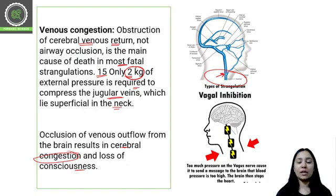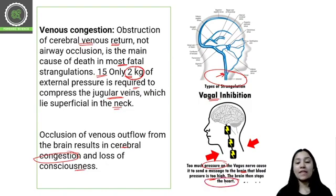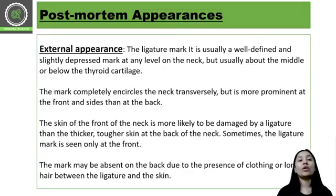Vagal inhibition occurs when too much pressure on the vagus nerve sends a message to the brain that blood pressure is too high, causing stoppage of the heart. Because of this stoppage of the heart, blood pumping stops and the person dies.